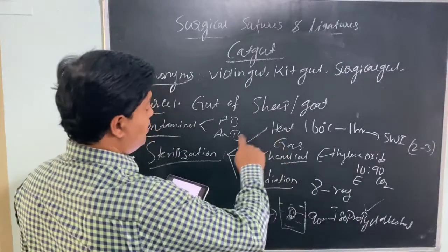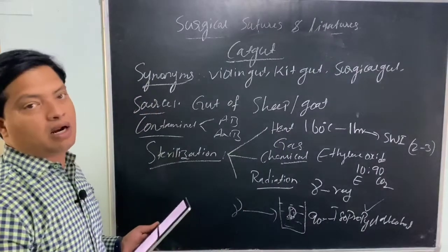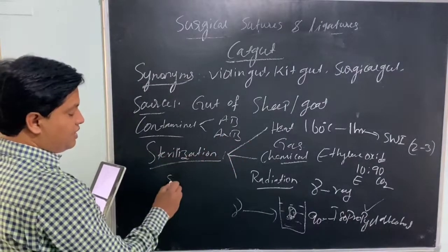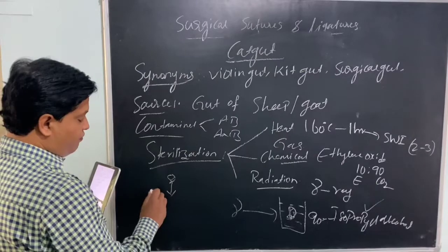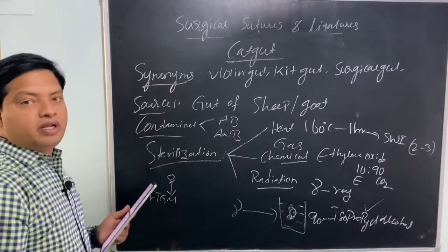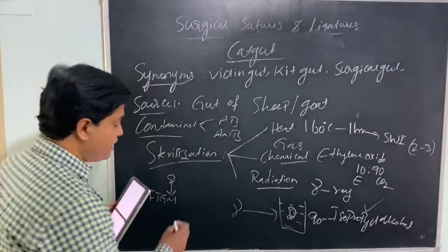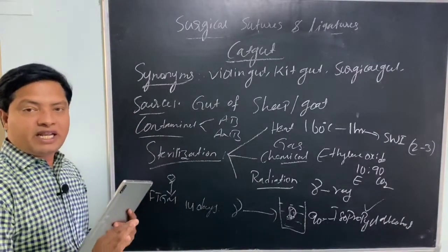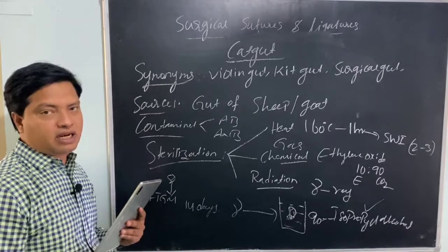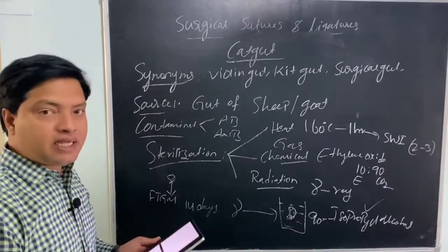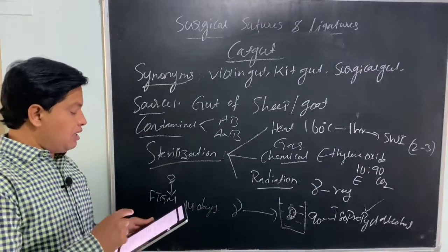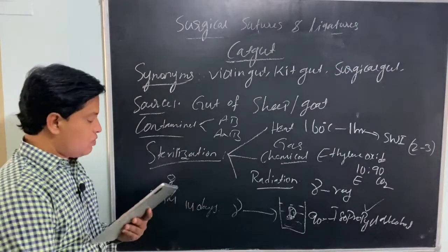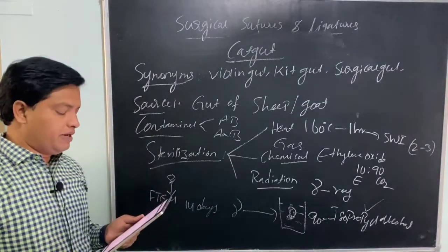After sterilization, you need to verify whether the catgut is actually sterile. To do this, place the sterilized catgut in fluid thioglycolate medium and incubate for 14 days. If there is no bacterial growth after 14 days, it is sterile; if growth is found, it is non-sterile. You can also use soybean casein digest medium as an alternative.